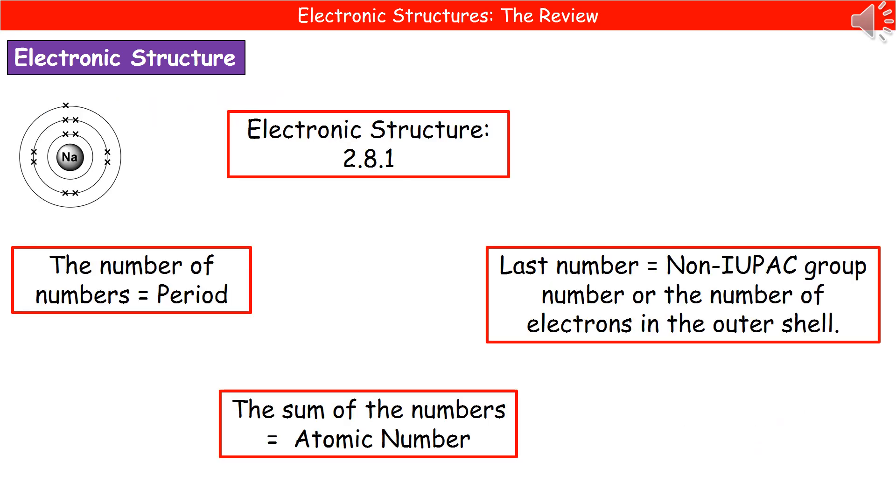Once you've actually worked out that electronic structure, that does give you quite a lot of information about that particular atom. The first thing is, we've actually got three numbers there. And the number of numbers, i.e. three in this case, tells you what period that can be found in on the periodic table. So sodium is in the third period. The last number in its electronic structure is going to be its non-IUPAC group number. So in this case, it's the number one, therefore sodium is in group one. And that also tells us the number of electrons in the outer shell, because whatever the group number is, that tells us how many electrons are in the outer shell.